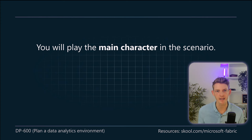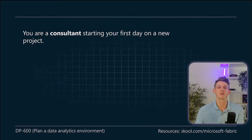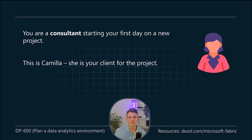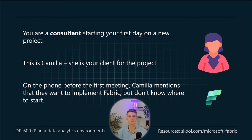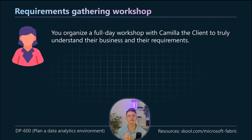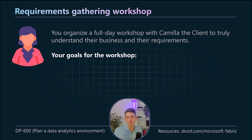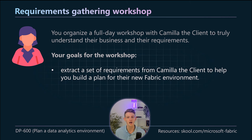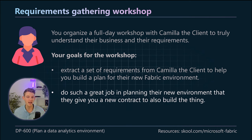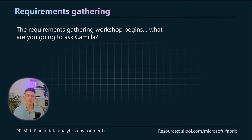You will play the main character in a scenario that's going to walk you through everything you need to know for those four elements of the study guide. You are a consultant starting your first day on a new project. This is Camilla — she is your client. She had mentioned she wants to implement Fabric but doesn't know where to start. You're going to start with a requirements gathering workshop, organizing a full day workshop to truly understand their business and requirements. Your goals are to extract requirements to build a plan for their new Fabric environment, and to do such a great job that the client gives you a new contract to build it.